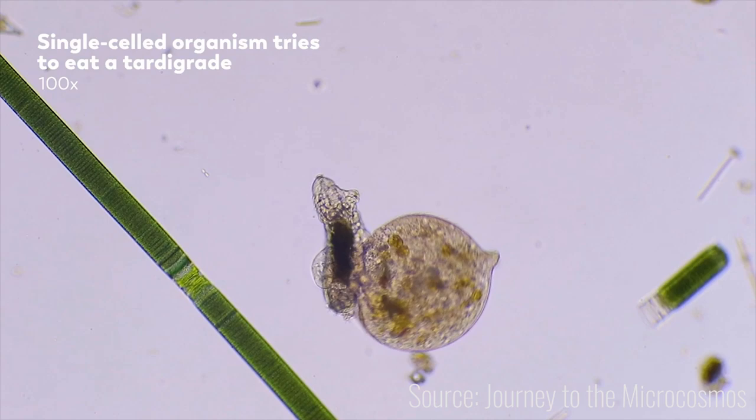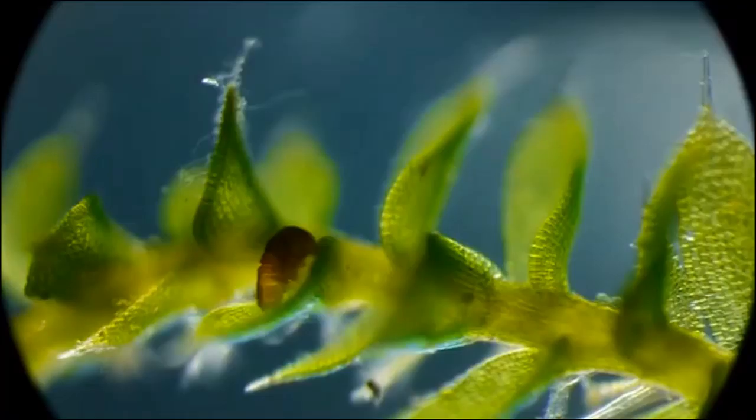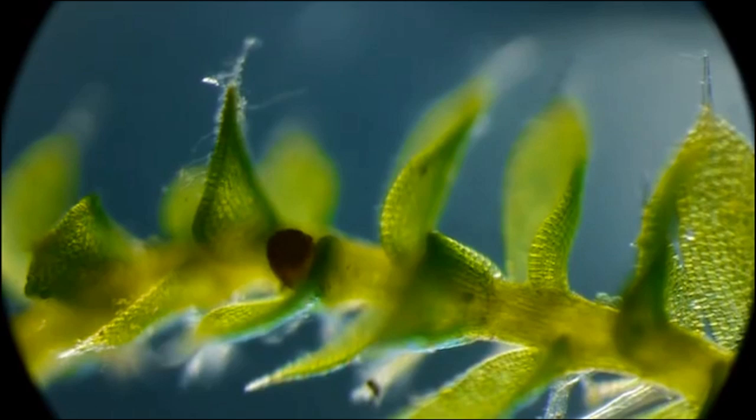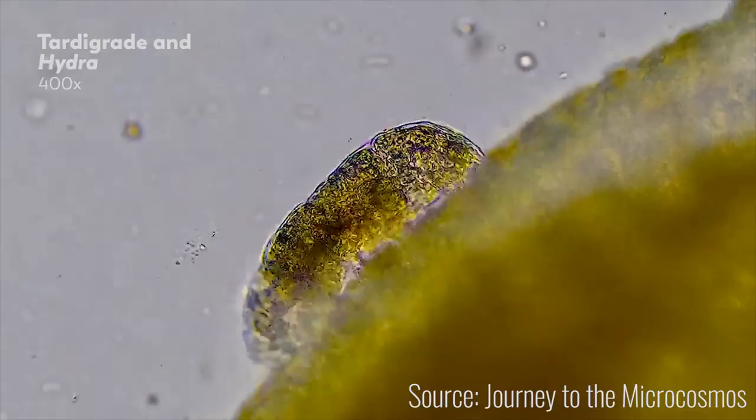As you can see, tardigrades are actually quite simple organisms and seem to have nothing special. But how can they survive conditions that would cause a mass extinction? The answer to this question is in a biological state in which tardigrades can enter when the biological conditions are too extreme.